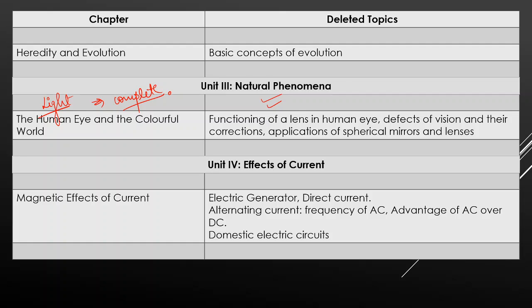Next, Human Eye and the Colorful World. Functioning of lens in a human eye, how it functions, this will not come. Next, defective vision and their corrections: myopia, presbyopia, hypermetropia, nothing will come. This defective vision is also fully deleted, fully removed. Next, applications of spherical mirrors and lenses, this will also not come, this is also deleted. So now from Human Eye and Colorful World, only normal things like dispersion, scattering, all this will come.